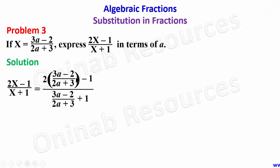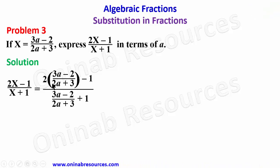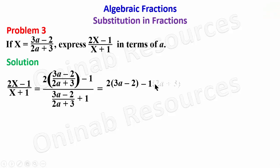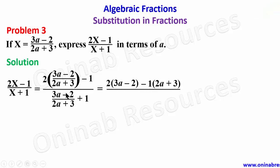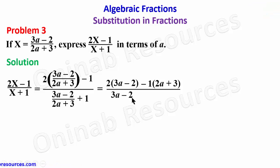Now we remove fractions from the numerator and denominator by multiplying each by 2a plus 3, which is the denominator here. We now have 2 into 3a minus 2, minus 1 into 2a plus 3. We have multiplied the whole of this by 2a plus 3, so that term is gone. Then at the denominator, the first term multiplied by 2a plus 3 gives 3a minus 2, then plus 1 into 2a plus 3.